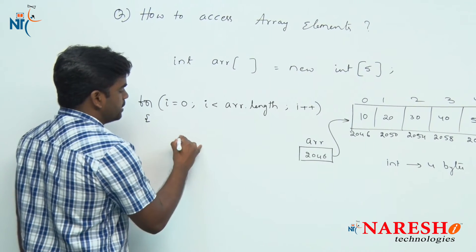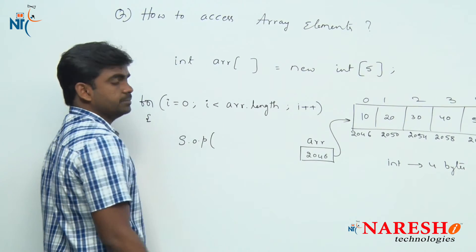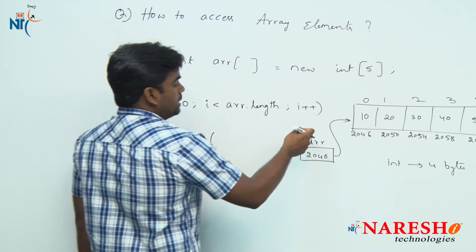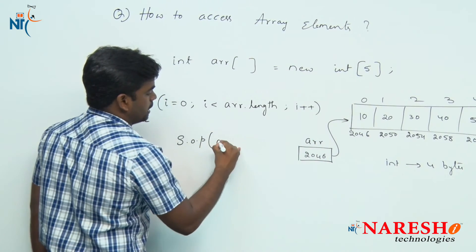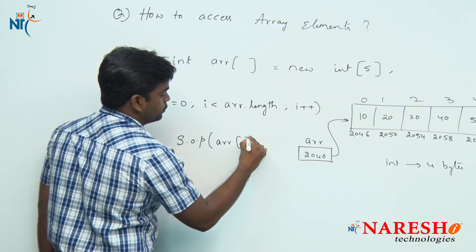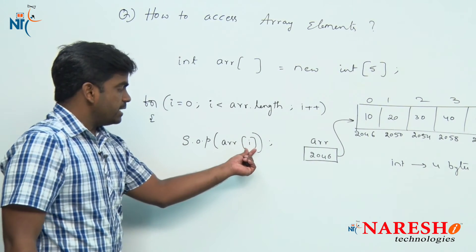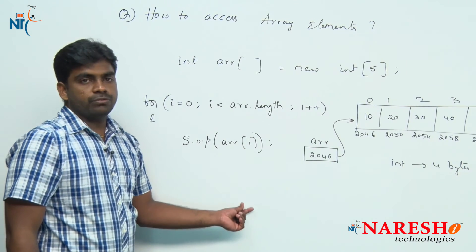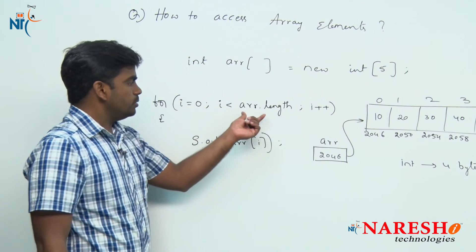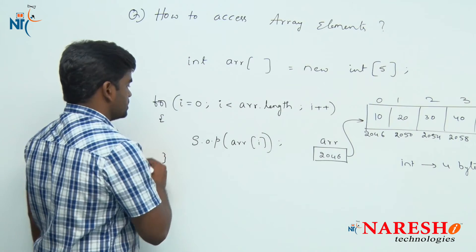Directly we are printing system dot out dot println. ARR of 0, ARR of 1, ARR of 2 is nothing but ARR of i. In place of i, 0, 1, 2, 3, 4 will be substituted from 0 to less than length.